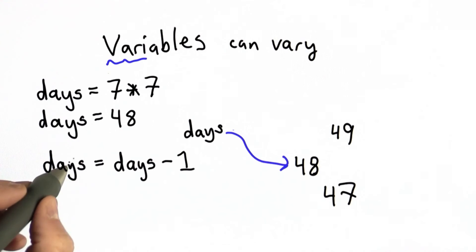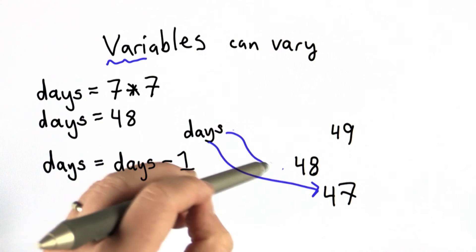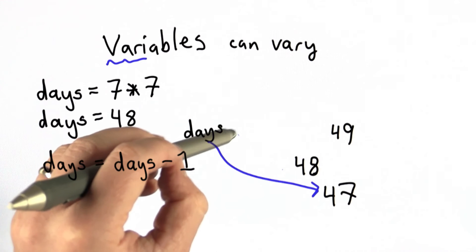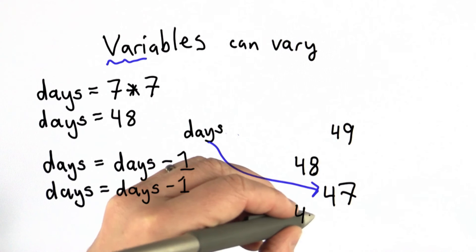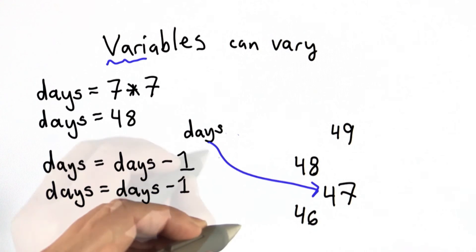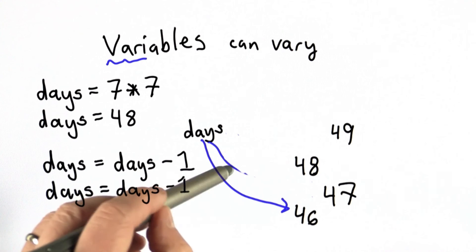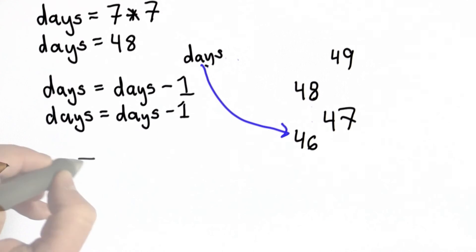That will assign to the variable days. So now the value days refers to the value 47. No longer refers to 48. So we could keep doing that. If we did another statement, the same exact one, that's going to change the value again. This time, the first time the value days is 47. We'll subtract 1. We'll get the value 46. And then we do the assignment. That'll change the value. So now days refers to the value 46.